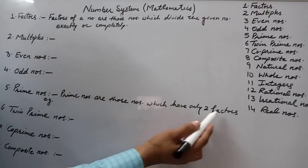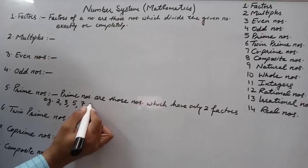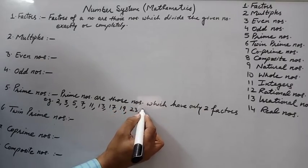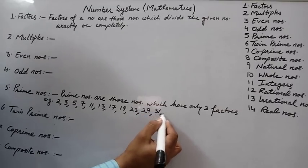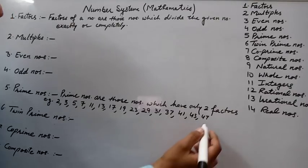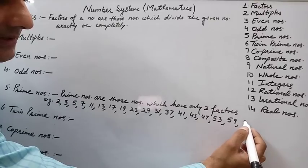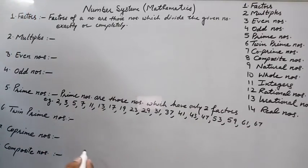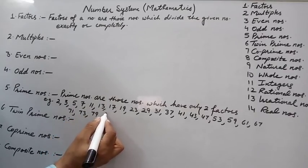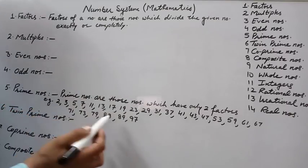Prime numbers include 2, 3, 5, 7, 11, 13, 17, 19, 23, 29, 31, 37, 41, 43, 47, 53, 59, 61, 67, 71, 73, 79, 83, 89, and 97. These are all the prime numbers from 1 to 100.